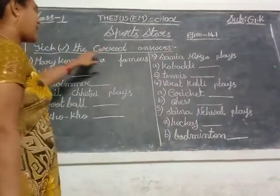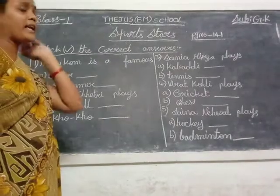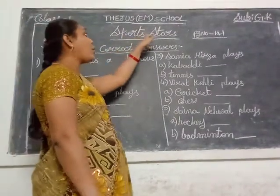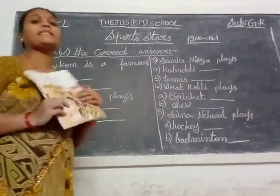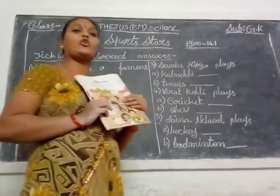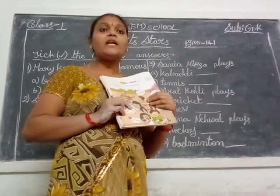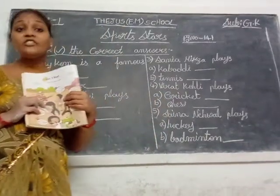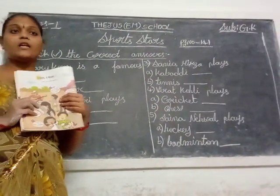Pick the correct answers. What is the name, children? Sports stars. That means cricket, tennis, badminton — these are sports, children. This lesson has a special edition — special persons are there.